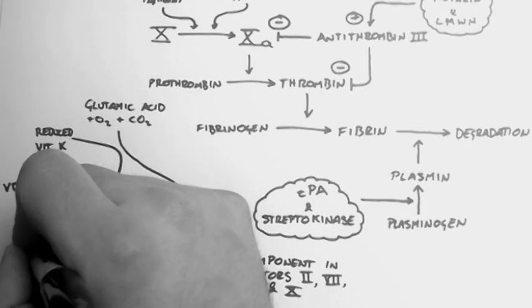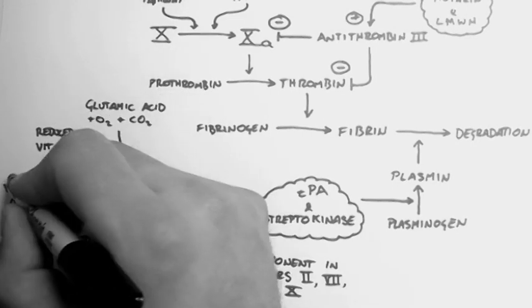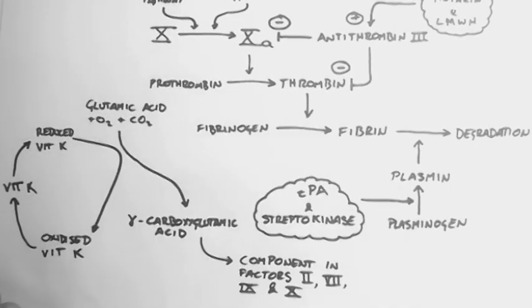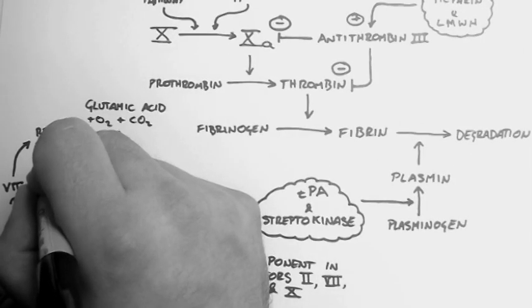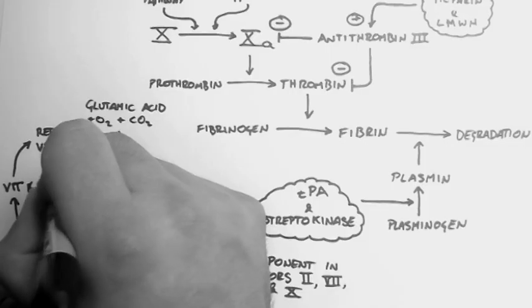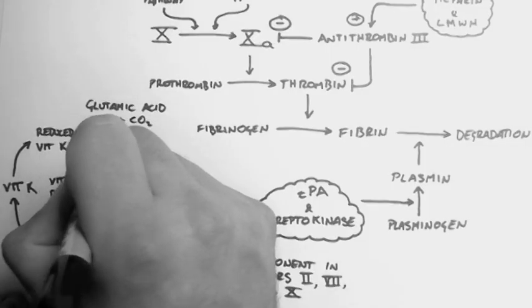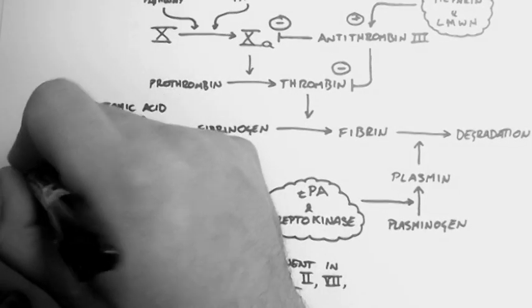Oxidized vitamin K then gets converted back into vitamin K, and then again into reduced vitamin K. And this occurs by the action of an enzyme called vitamin K reductase, which acts at both steps.